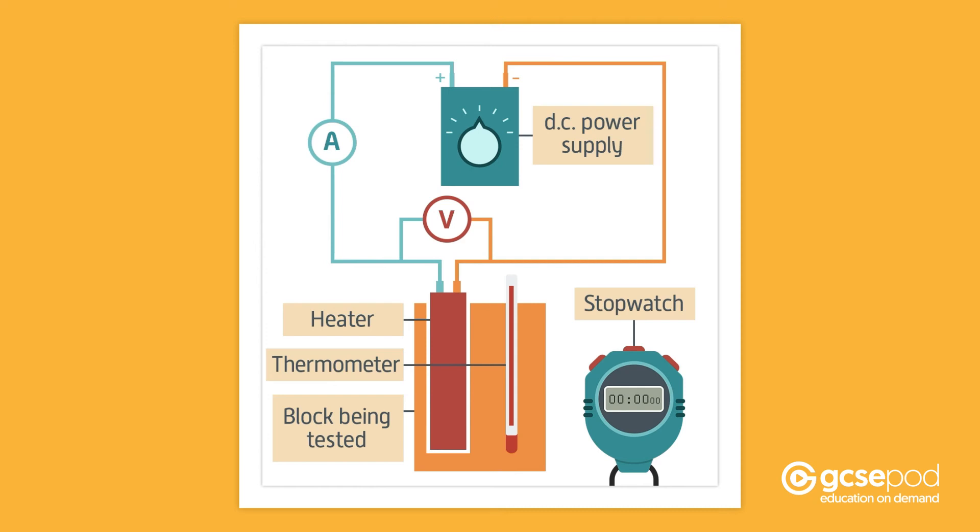The equipment should be set up as shown. The power supply is connected to the heater, with the ammeter connected in series and the voltmeter in parallel with the heater. The heater and thermometer are inserted into the appropriate parts of the block. When the equipment is set up and ready to go,